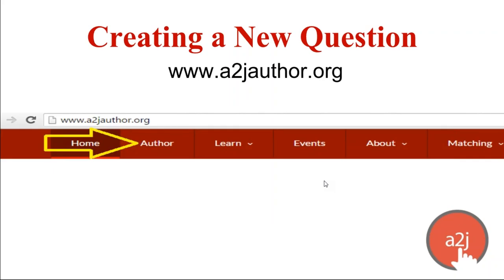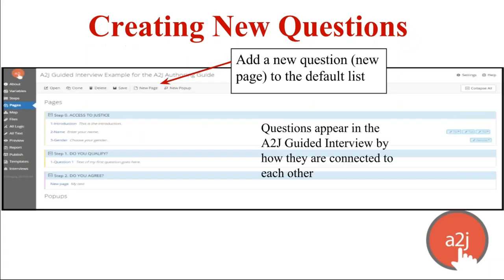So where does this all happen? To access A2J Author, you need to be logged into your account on our website at A2JAuthor.org. You can log in under the Author tab. Once logged in and back on the Author tab, it will show you a button that says Run A2J Author. When you do that, it takes you to the Interviews tab. When you open up an interview you're ready to work on — either a new one or an existing one —